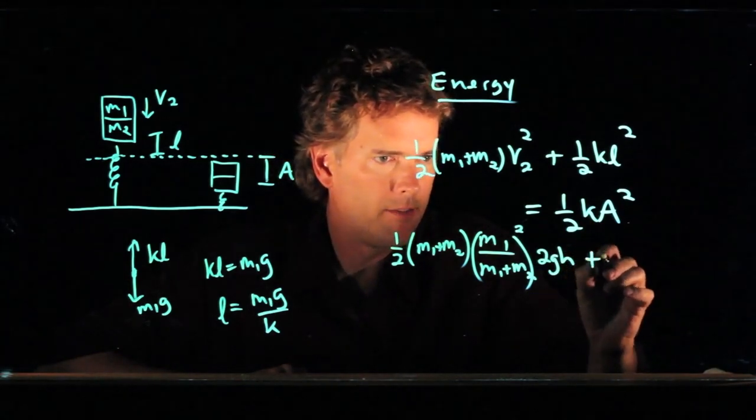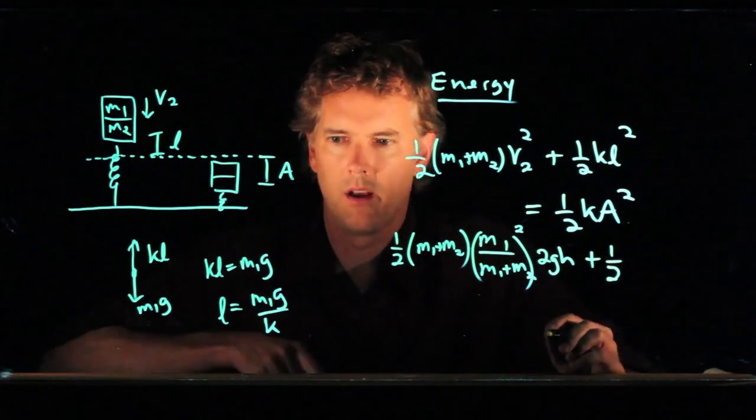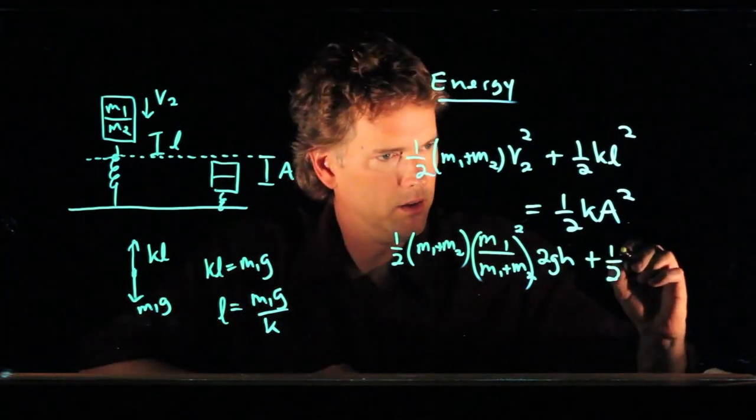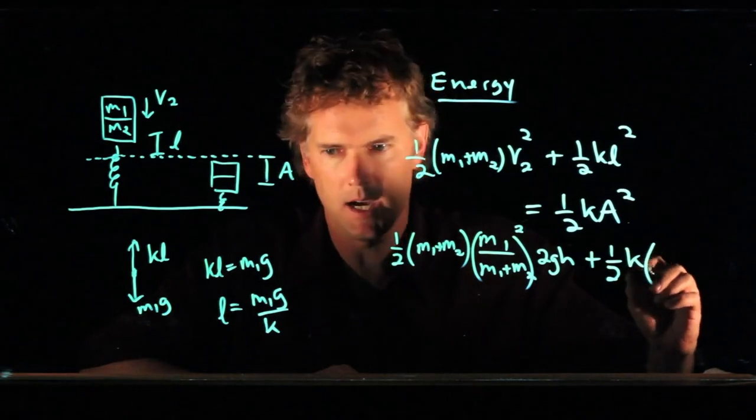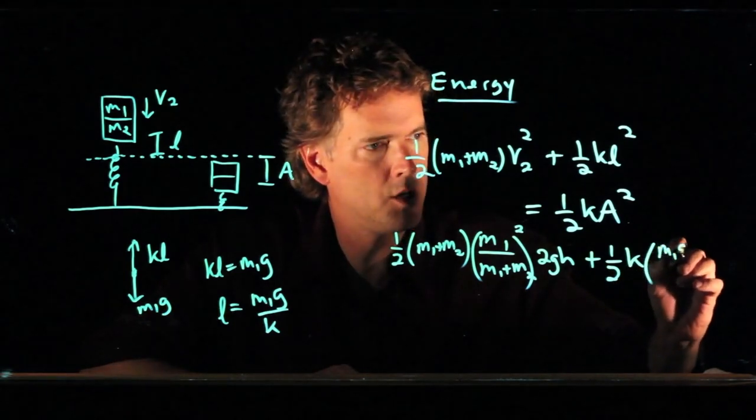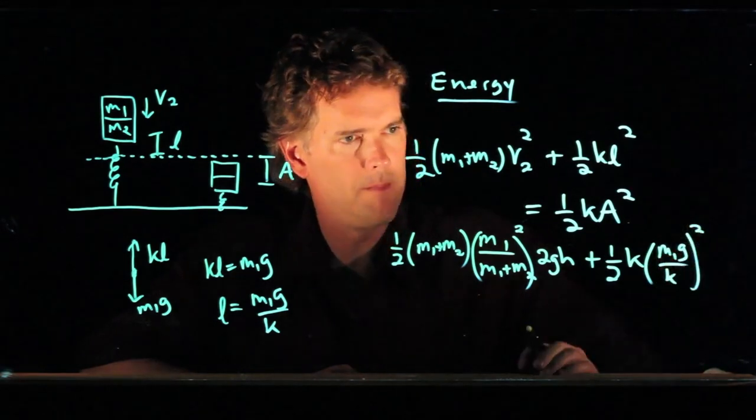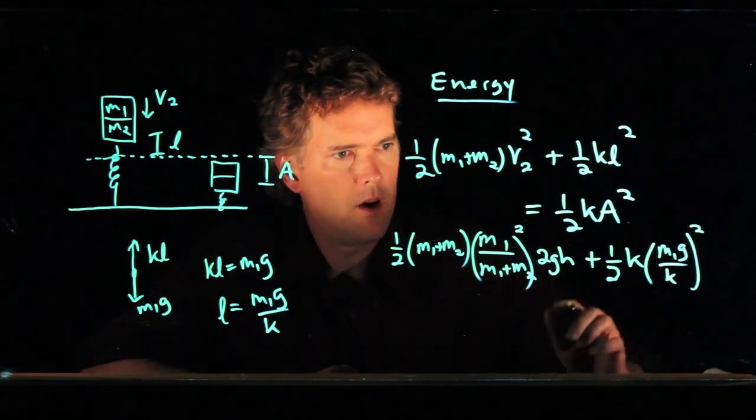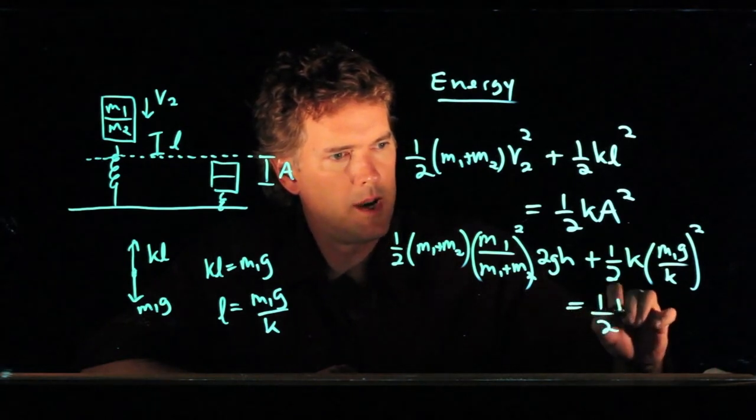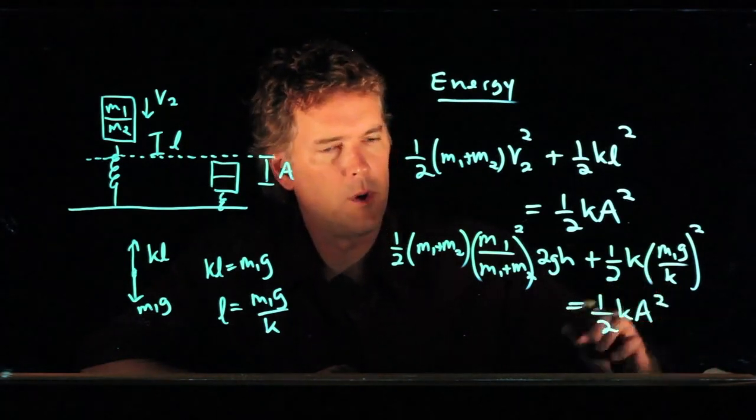We have one half KL squared. There is our L. So we get K times M1 G over K quantity squared. And all of that is equal to one half KA squared.